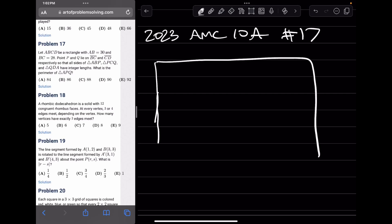Okay, so let A, B, C, D be a rectangle. So A, B, C, D, with AB being 30, BC being 28, P lies on BC and Q lies on CD.